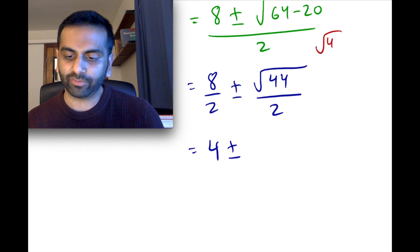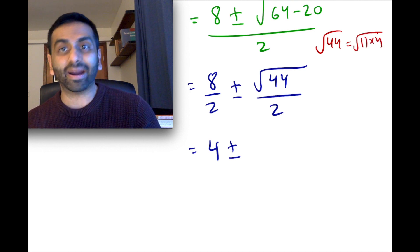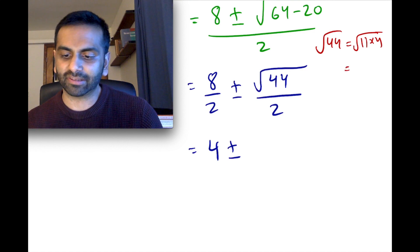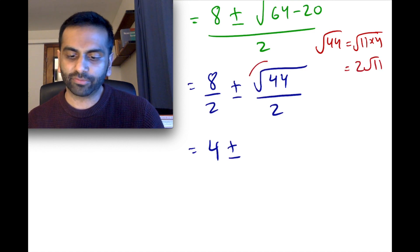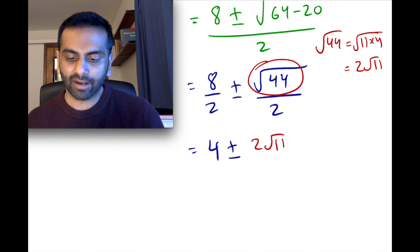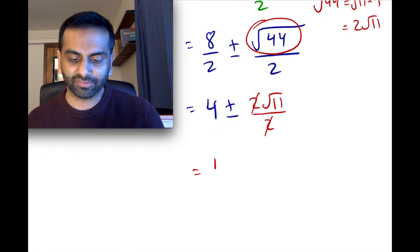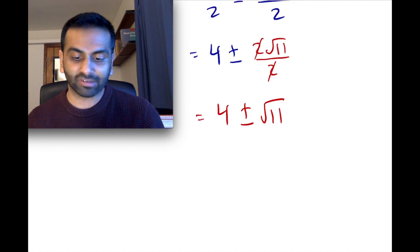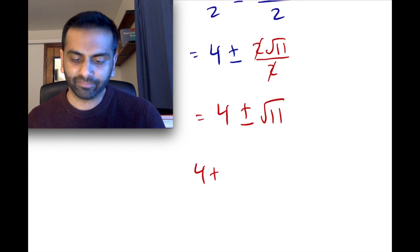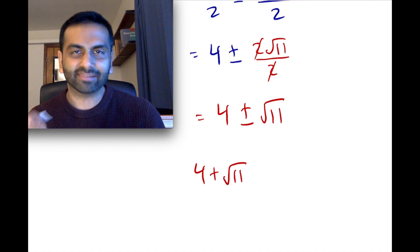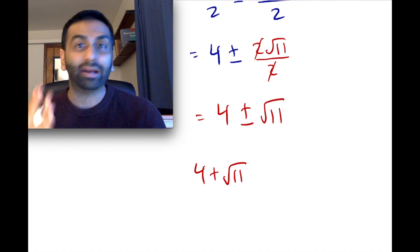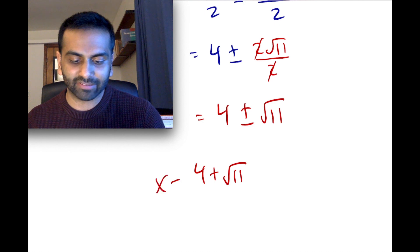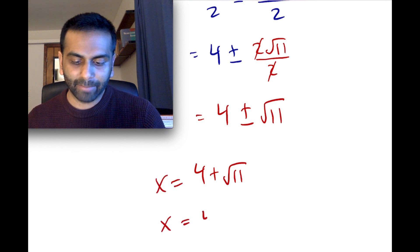Simplifying: 8 over 2 is 4. For root 44, rewrite 44 as 11 times 4 — so root 44 equals root 4 times root 11, which is 2 root 11. With the 2 in the denominator, the 2s cancel. So overall this is 4 plus or minus root 11, meaning the two solutions are 4 plus root 11 and 4 minus root 11. Since root 11 is not a nice number, these are just left as expressions — those are your two x-intercepts of that parabola.